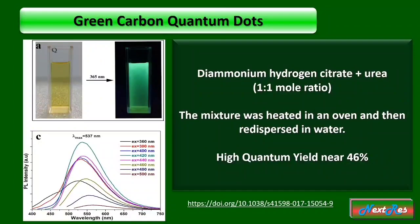Now coming to another synthesis technique, where you have to use diammonium hydrogen citrate, and to it you have to add urea in a 1 to 1 mole ratio. The mixture was heated in an oven and later needed to be dispersed in water. Dialysis was needed to perform on the solution mixture for purification.